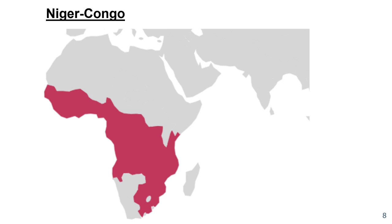Niger-Congo covers a lot of middle Africa and a little bit of Southern Africa — we have Tanzania and Nigeria highlighted there. The hearth of Niger-Congo is in Western Africa. You can see that the southwestern part and the northern parts of Africa are not highlighted.